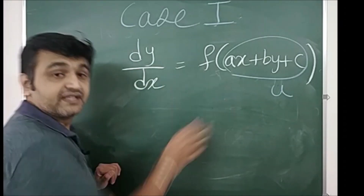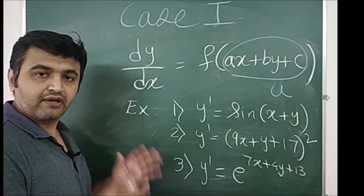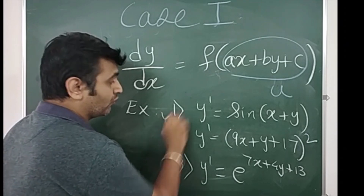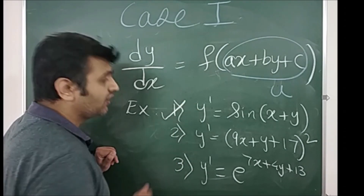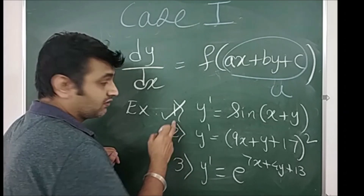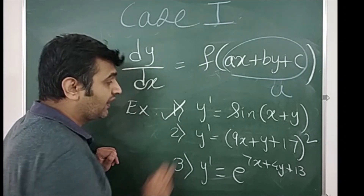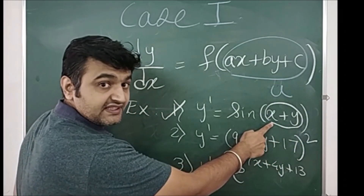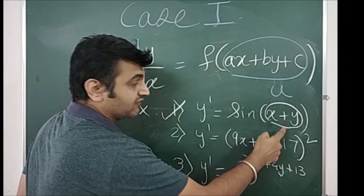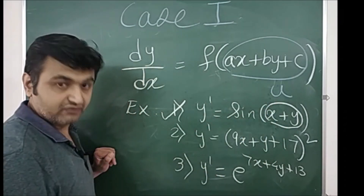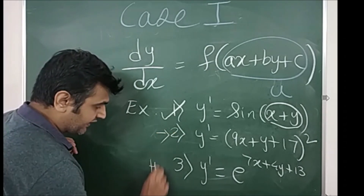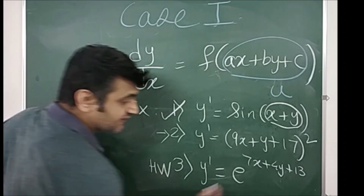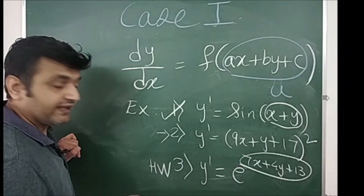Let me take an example to make the method clear. Suppose you have these three differential equations. If you recall from my last lecture, one was given as a homework problem and many of you solved it and posted answers in the comment section. For the second question, you observe that a = 1, b = 1, c = 0, so you substitute that expression as u, and once you do that you will be able to solve it. I will solve one right now and give the third as a homework question.